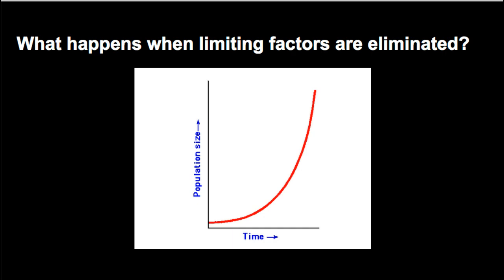So what happens when these limiting factors are eliminated — such as removing wolves from an ecosystem or adding fertilizer to an ecosystem? Oftentimes what we see is this pattern of exponential growth: a really rapid increase in population size until a new limit is reached and new limiting factors begin to take over.